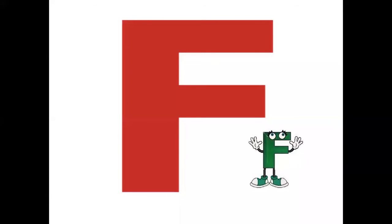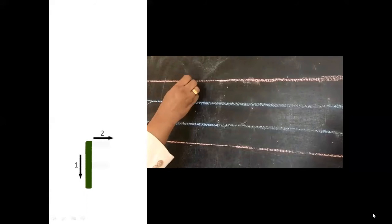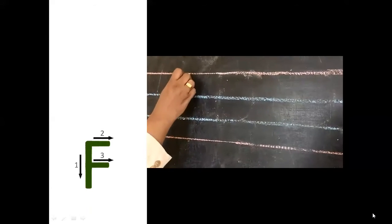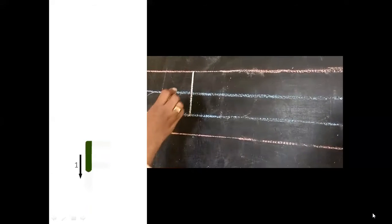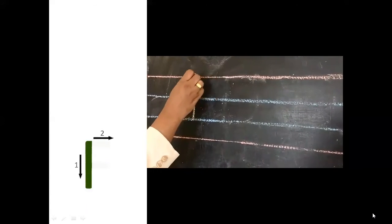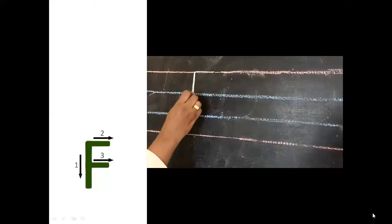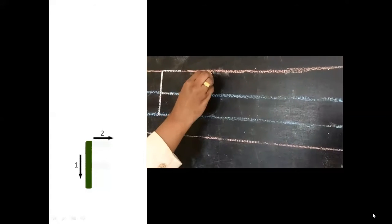Now let's learn capital F. Let's see how to write it. From the first to the third line, we draw a standing line, just like capital E. And then we draw a sleeping line from that standing line on the top. And then on the second line, again a sleeping line. That makes our capital F.